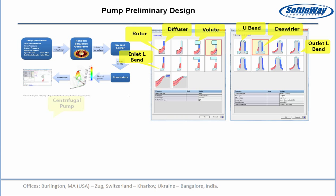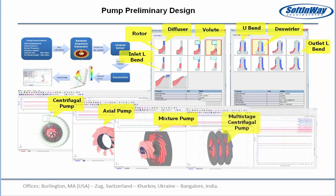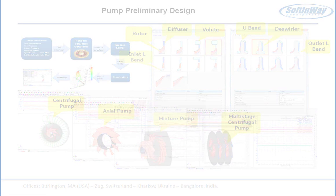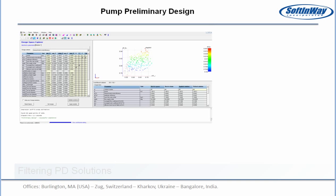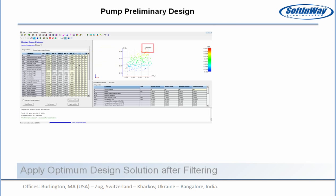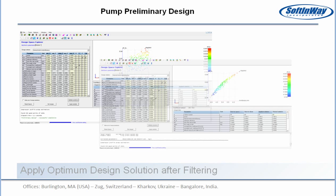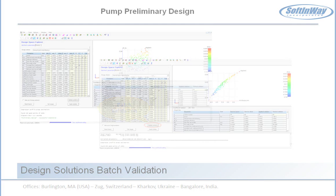Blade geometry is generated by default. In Design Space Explorer, you can filter design parameters and select optimum design solutions in 3D space. Design solutions can be batch validated by the meanline method.